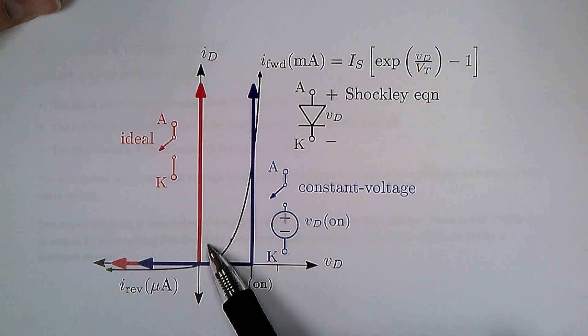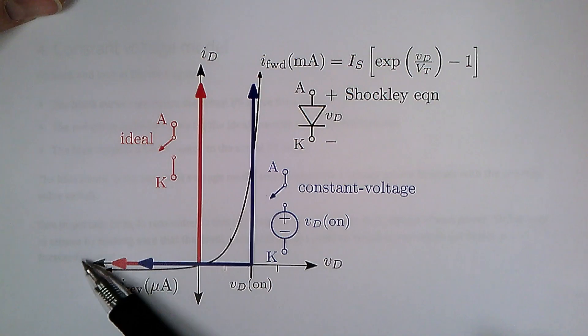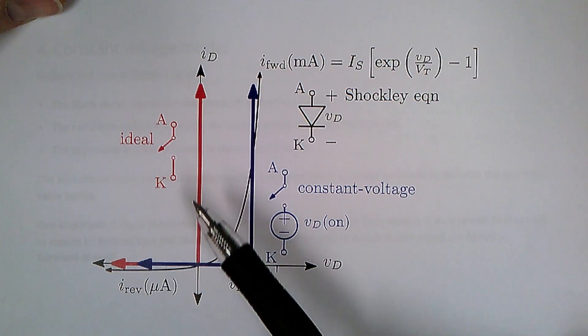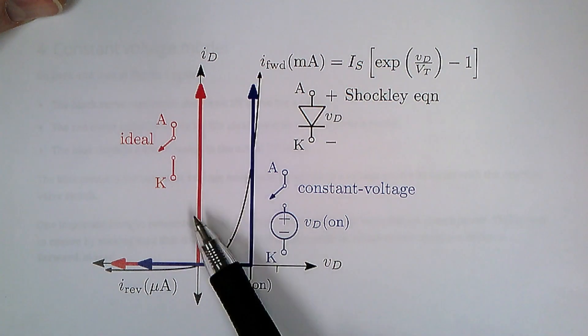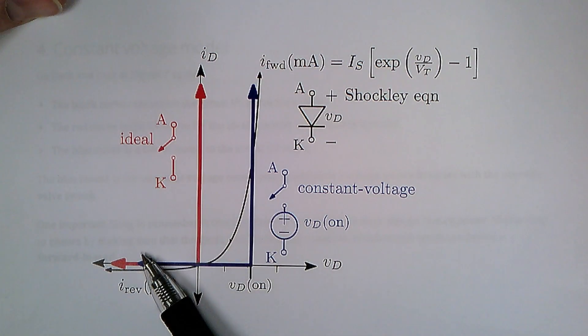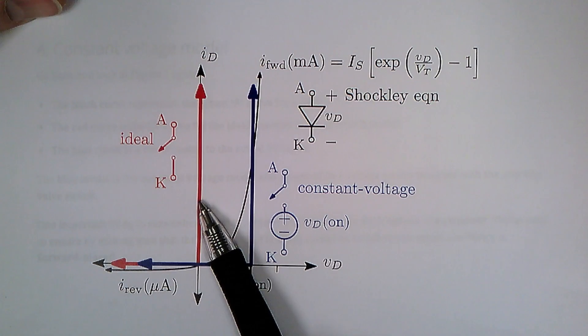It's an open circuit if the voltage is less than zero, which gives us a zero current. And it's a short circuit if the current is positive. Remember it was voltage less than zero and current is positive. There's a switch there between V and I.